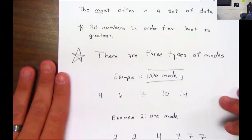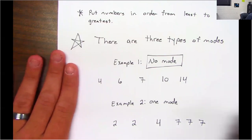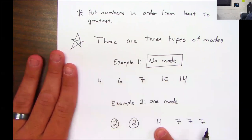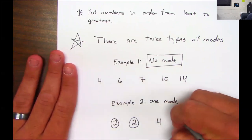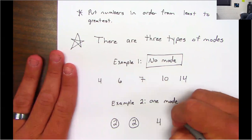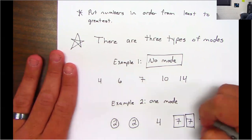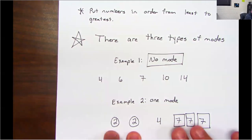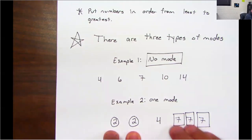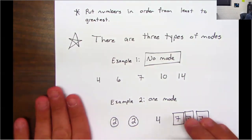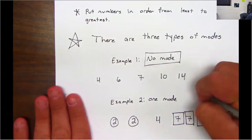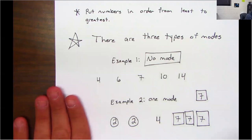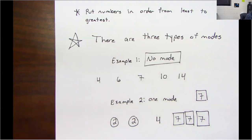Example two — this is one mode. I'm gonna circle: I got a two and I got a two. Then I got a four by itself. But look at this — I'm gonna put a square around these. So what do I have more of: two circles or three squares? I got three squares, so my mode here is seven, because it repeats the most often.